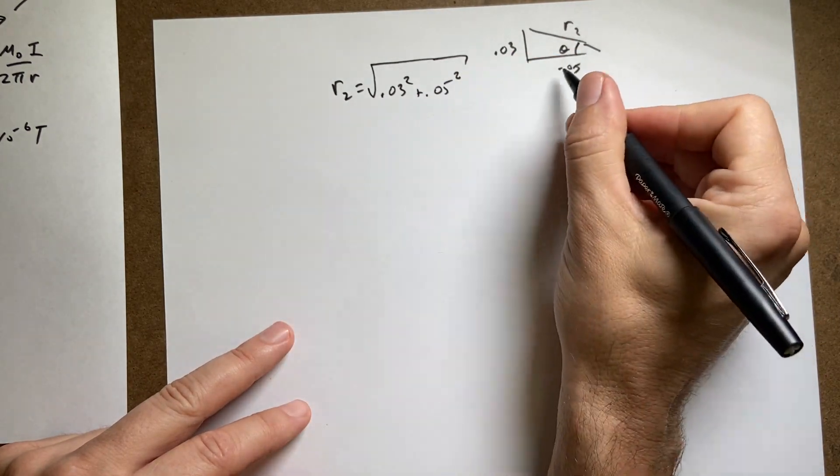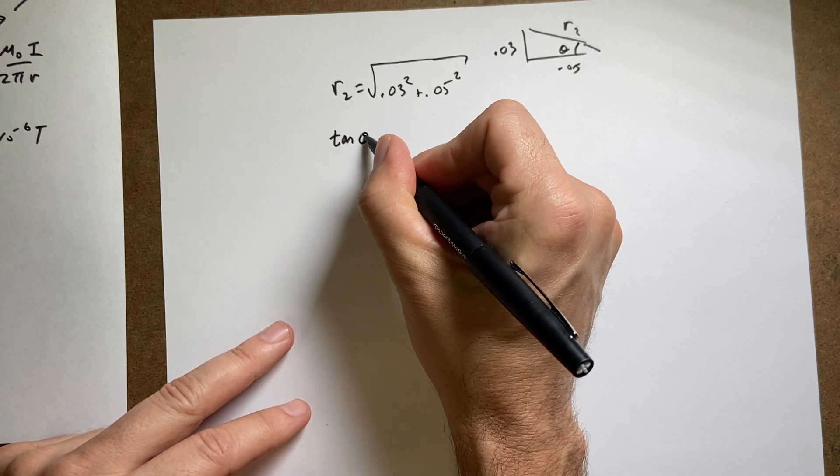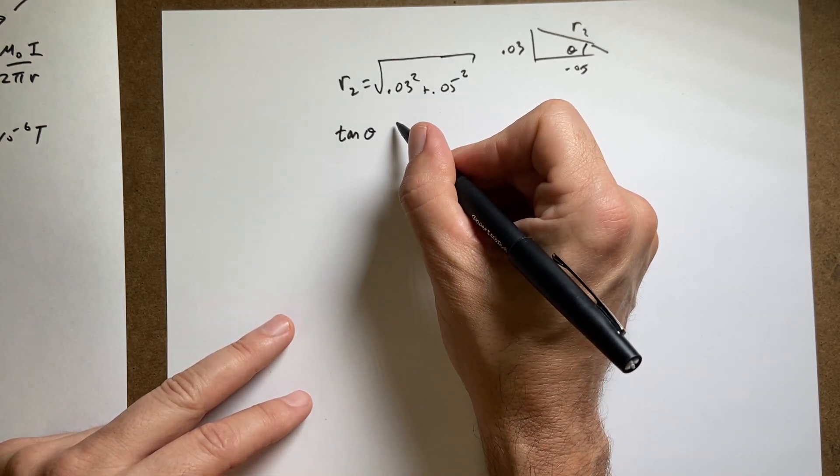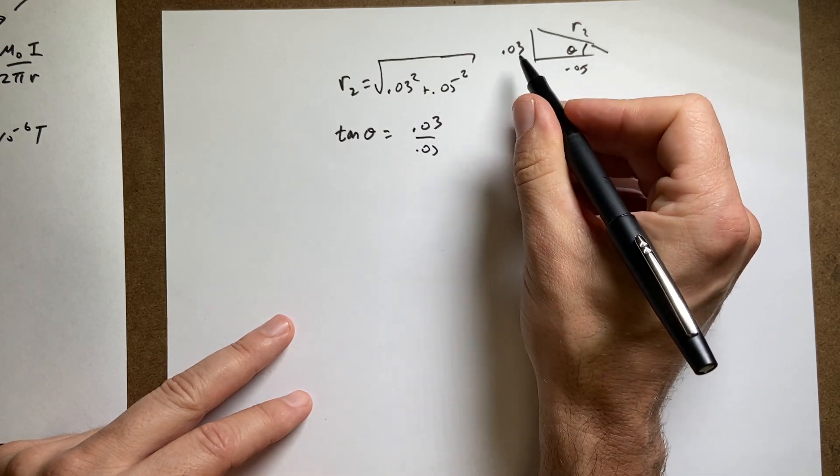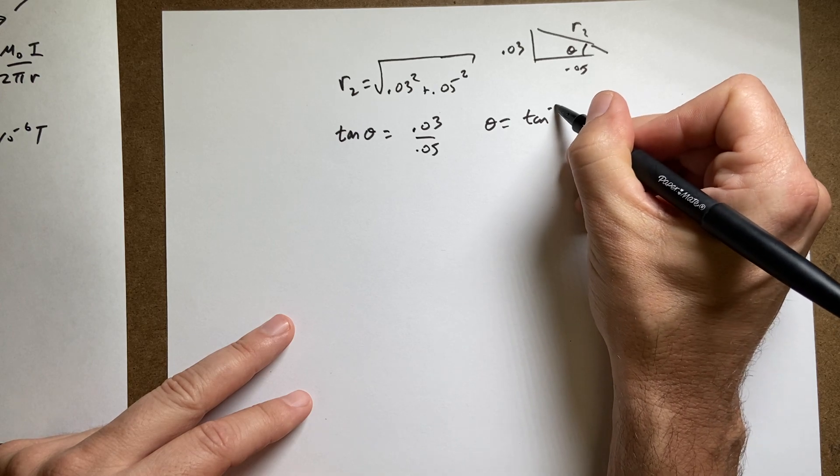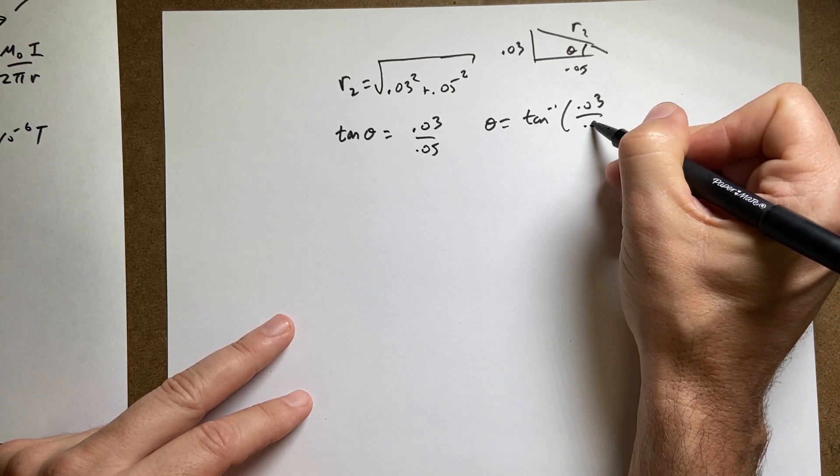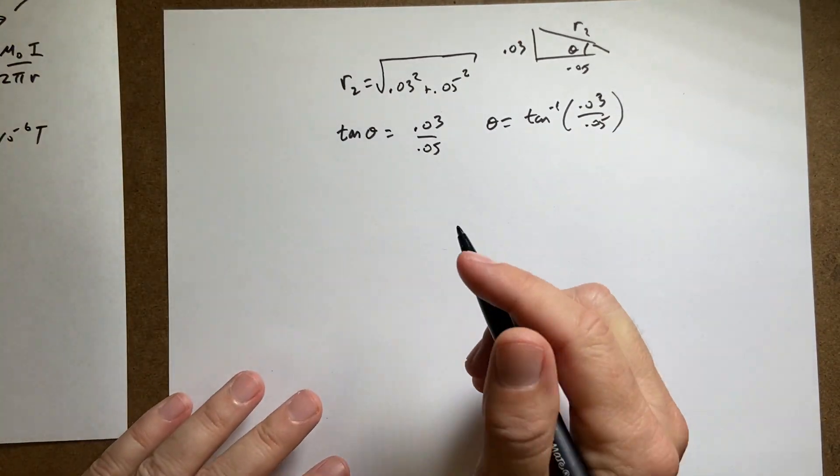The tangent of θ - this is one way to do it, not actually the best way but it's easiest to understand - tangent of θ is going to be equal to 0.03 over 0.05, opposite over adjacent. So θ is going to be the inverse tangent of 0.03 over 0.05. There's a more elegant way to do this, but that's fine.